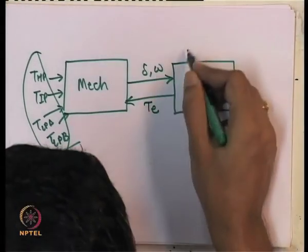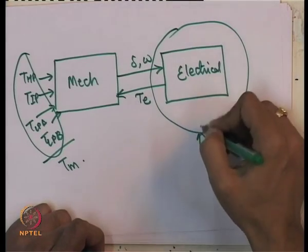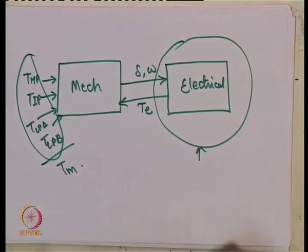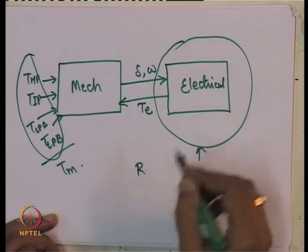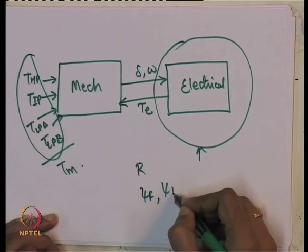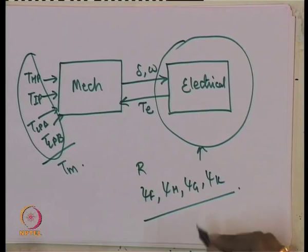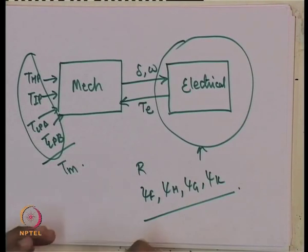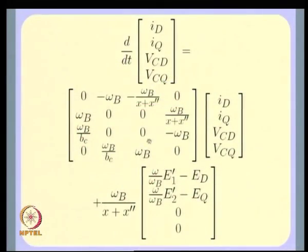What we will do now, in an isolated fashion just like we did for the mechanical system, is assume that delta and omega are constants and see what are the properties of the simplified electrical network. The assumptions are: resistances of stator and transmission line are small; delta and omega are constant; rotor fluxes are constant. We will run a simple Scilab program to obtain the eigenvalues of the electrical system's A matrix.